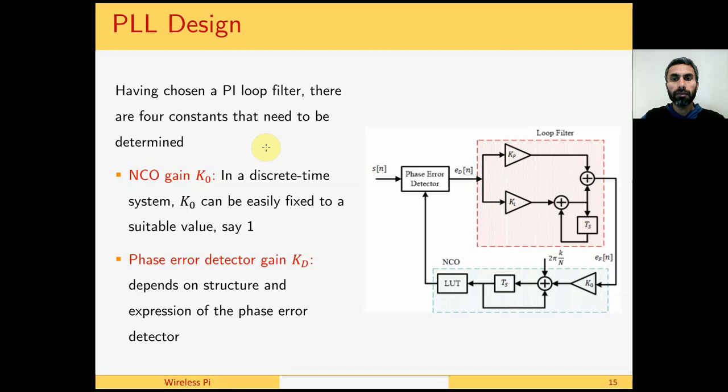now the PLL design comes to choosing the four loop constants. These are the loop filter constants Kp and Ki, proportional integrator constants, K0 from the NCO, and Kd from the phase error detector. Now, in discrete time system, K0 can easily be fixed to 1. And Kd, the phase error detector, again comes from the structure and expression of the phase error detector. We will see this in the example later and in the next lectures as well. The point is that this can be fixed to 1. This comes from the actual design of the phase error detector.